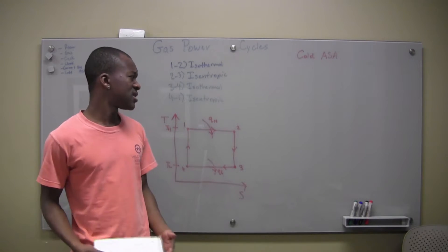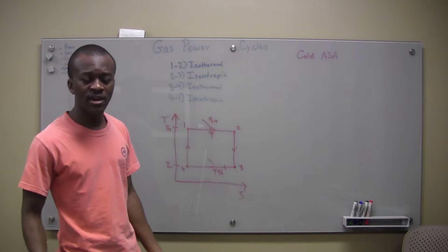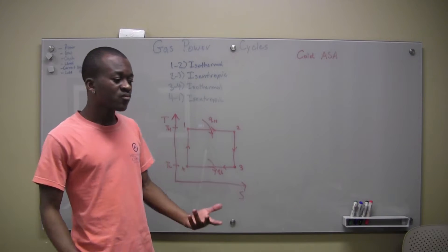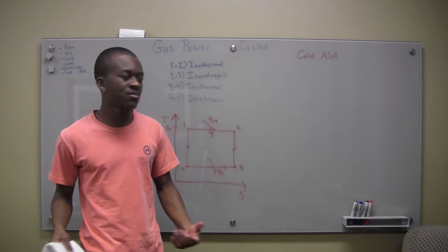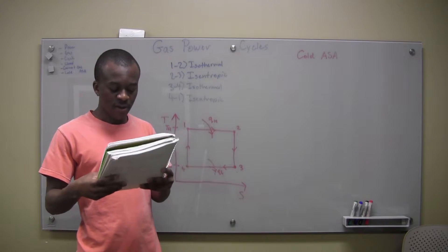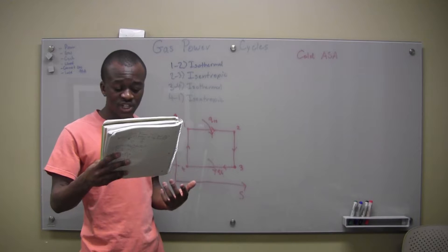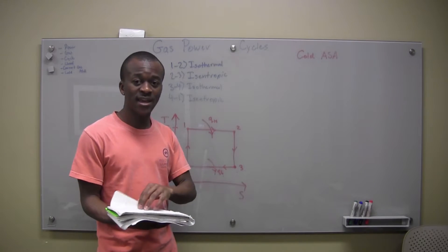The combustion process is replaced with Q in, and that makes sense. And then there's also an exhaust process, and we have Q out also. We neglect frictional change, and it operates on a cycle.